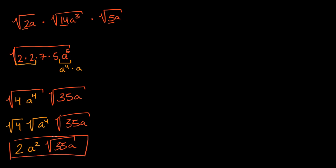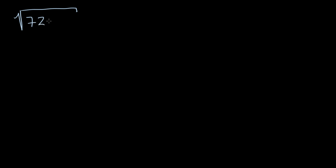Let's do one more example, and this time we're going to involve two variables — which, as you'll see, isn't that much more complicated. So let's simplify the square root of 72 x to the third z to the third. The key is: can we factor? 72 is not a perfect square, but is there a perfect square somewhere in there? If you try to factor it, you get 36 times 2, and 36 is a perfect square. Likewise, x to the third and z to the third are not perfect squares, but they each have an x squared and z squared in them. So let me put all my perfect squares out front: I have 36, x squared, and z squared.